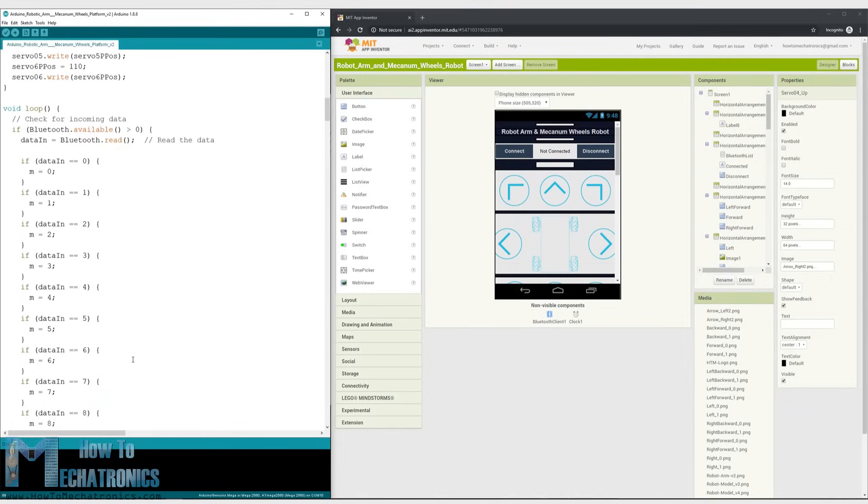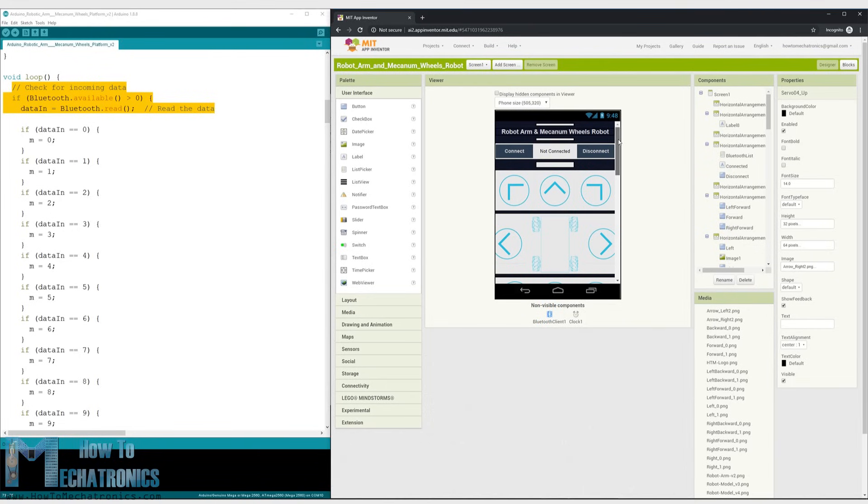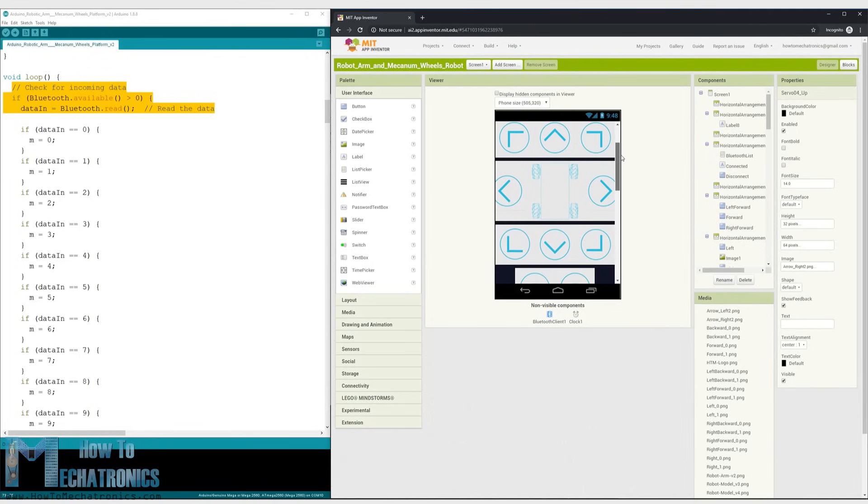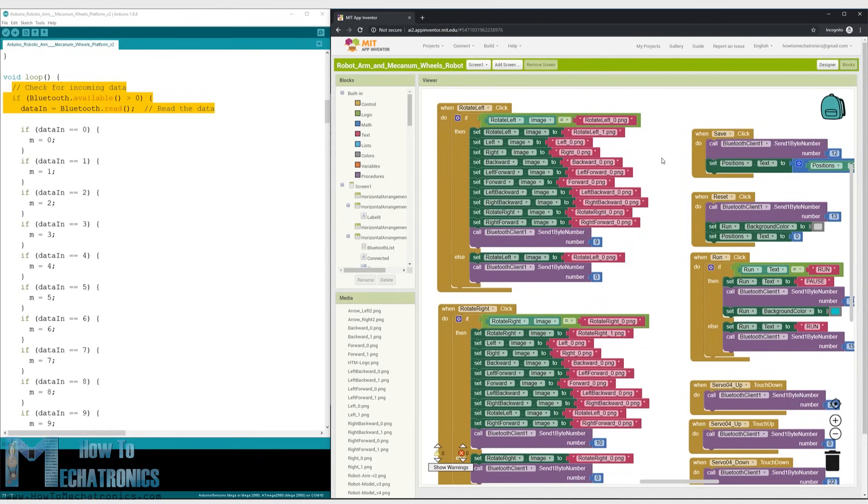Then in the loop section we start by checking whether there is any incoming data. This data comes from the smartphone or the Android app. So let's take a look what kind of data it is actually sending. The Android app is made using the MIT App Inventor online application. It consists of simple buttons which have appropriate images as background. If we take a look at the blocks of the app we can see that all it does is sends one byte numbers when the buttons are clicked.